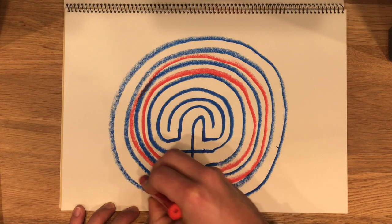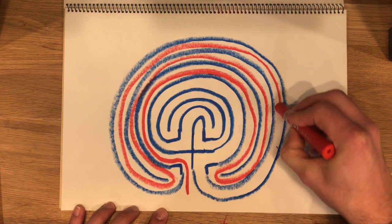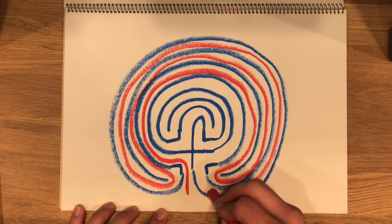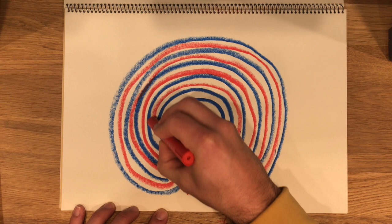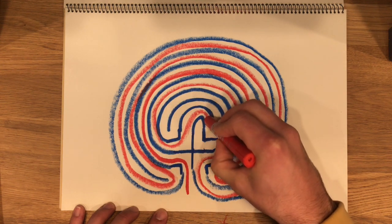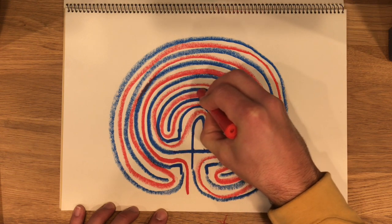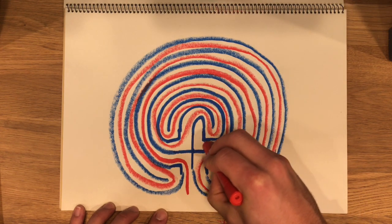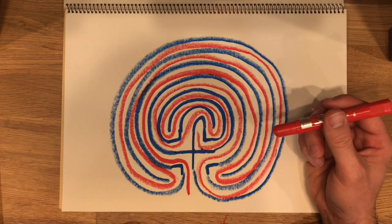Typically when we draw labyrinths, we draw the lines that define the pathway by walking in between them. So the pathway is the empty space and the lines show you what to walk between to have your labyrinth experience.